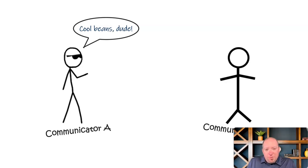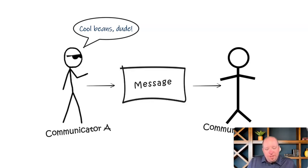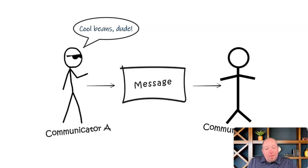We also had the third element. When communicator A spoke to the other one and outwardly shared something with them, that became what we call the message. The message is just what that person wanted to communicate to the other — it's the 'what' of the communication. It's what they were trying to communicate: 'Hey, you're doing something cool. I really like it. Cool beans, man.' That was the message.